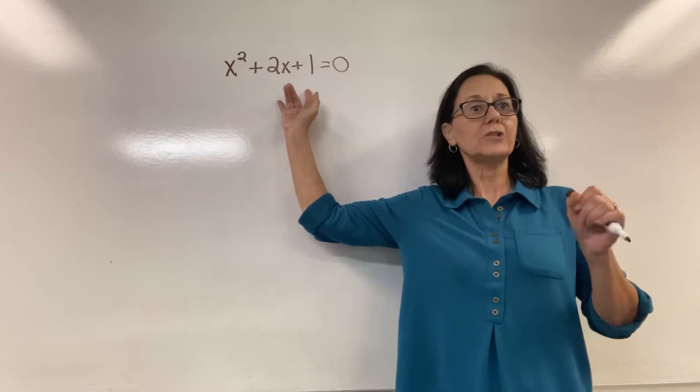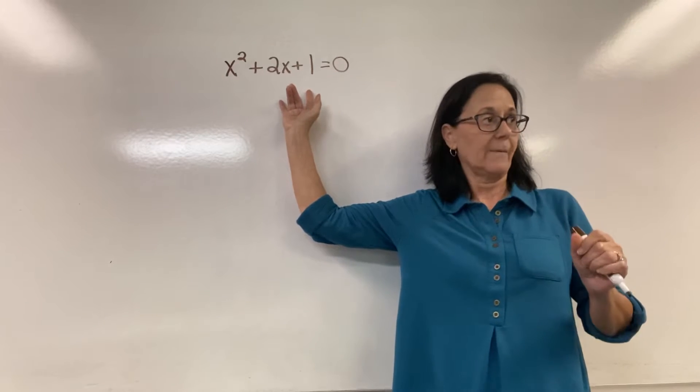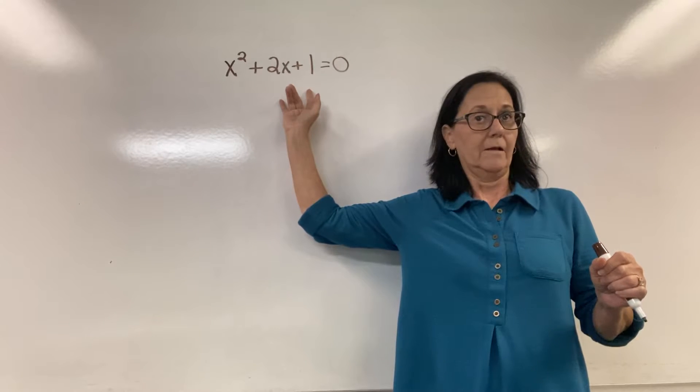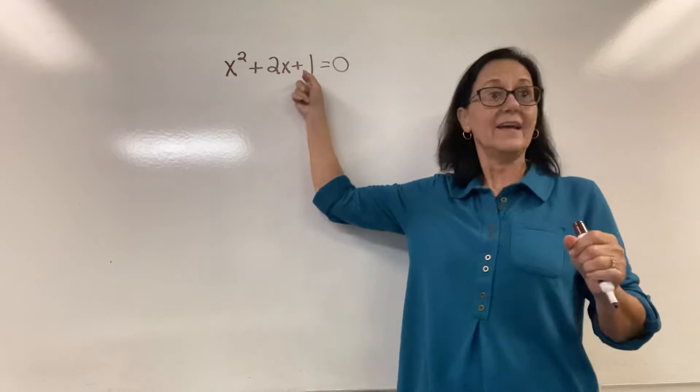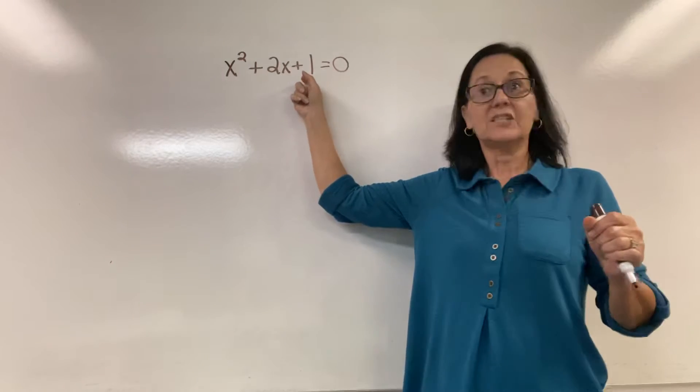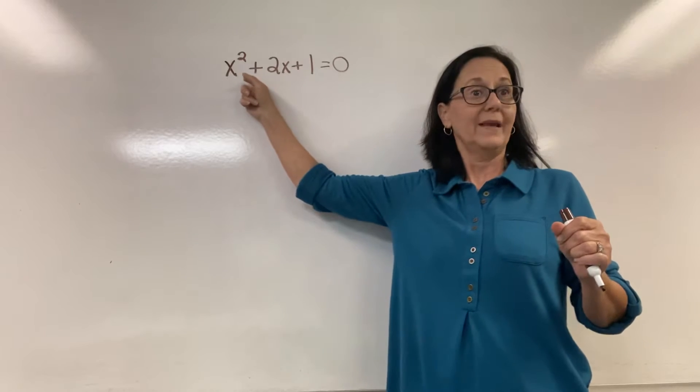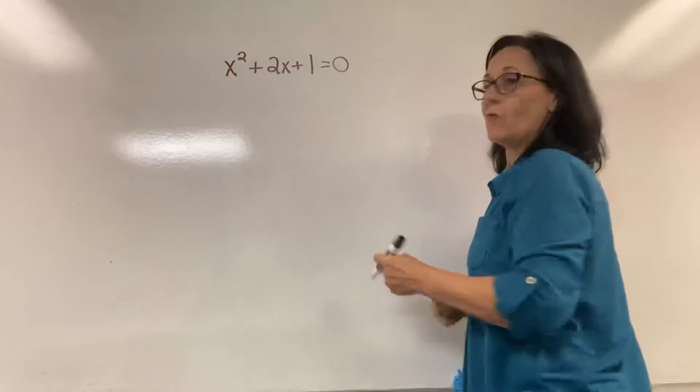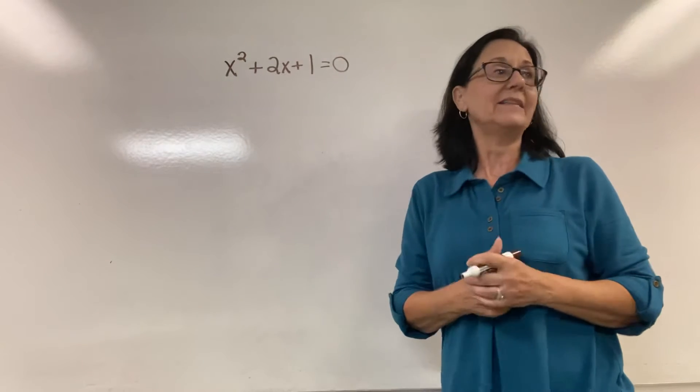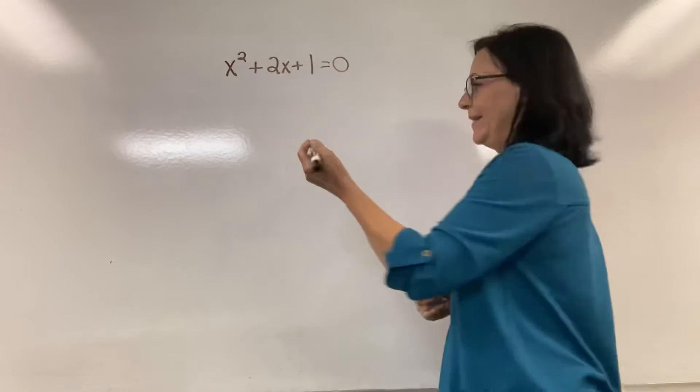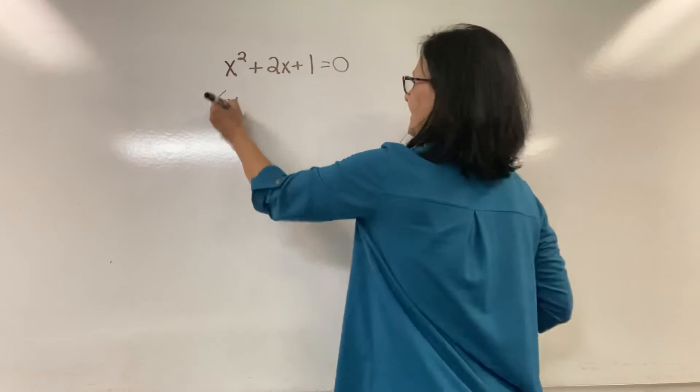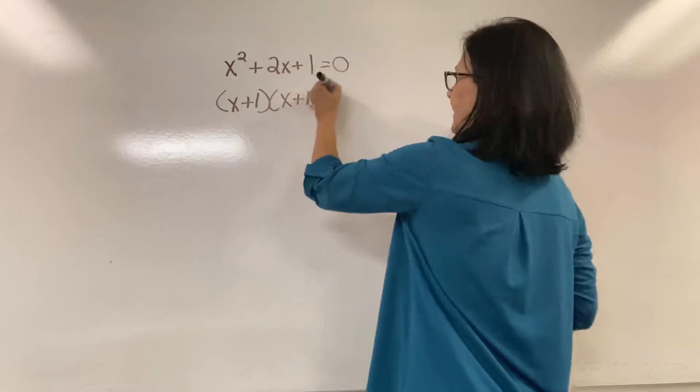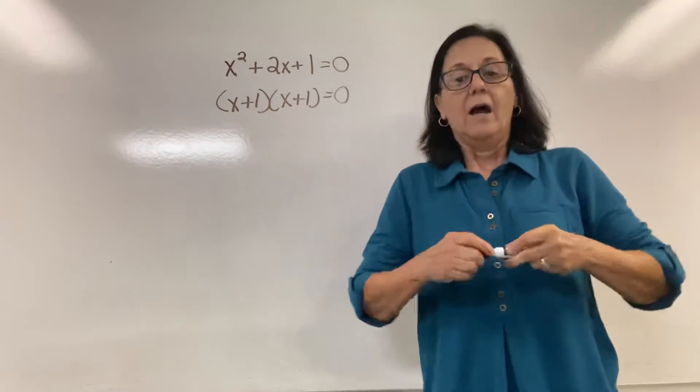Do you remember the questions we asked ourselves? What are factors of 1, the c value, such that we add them and they equal the b value? What are factors of 1 such that we add them and they equal 2? 1 and 1. So it would be x plus 1 times x plus 1 equals 0.